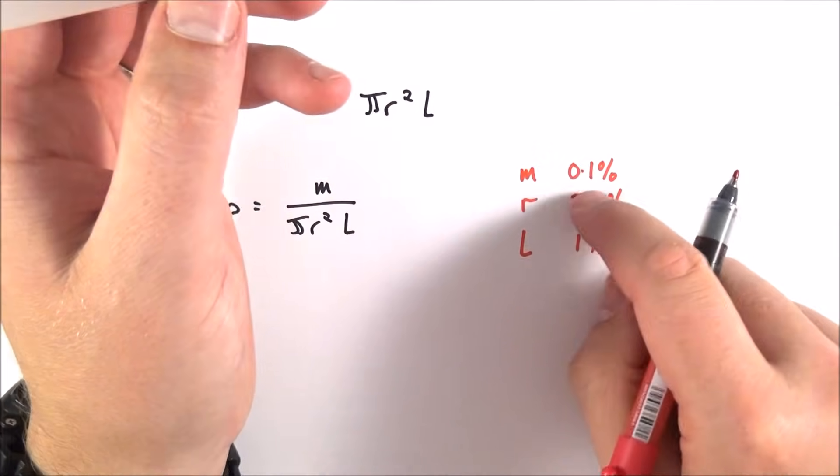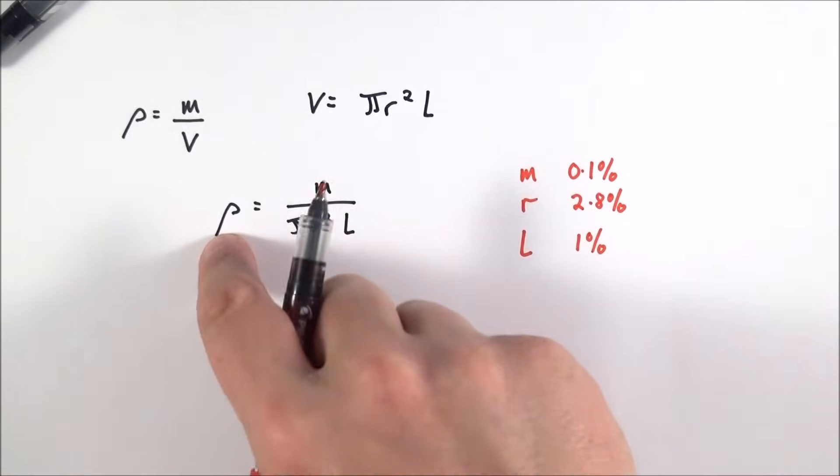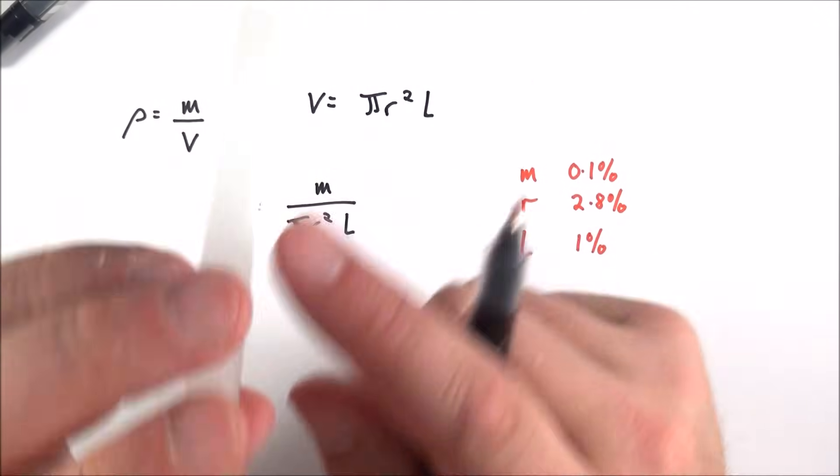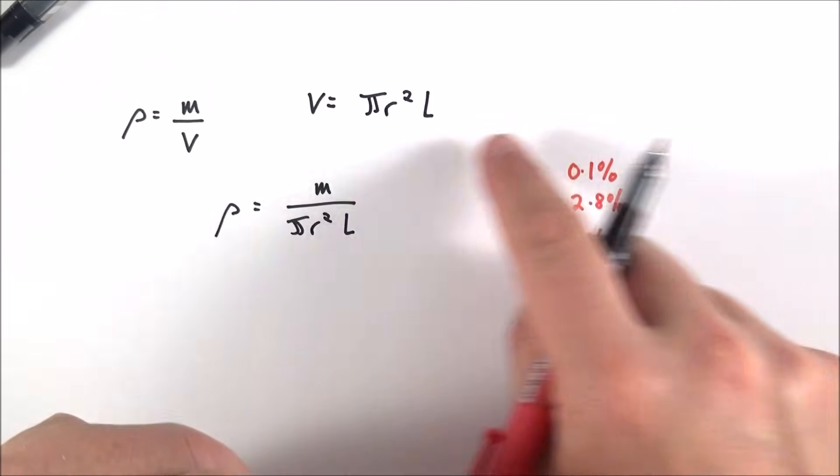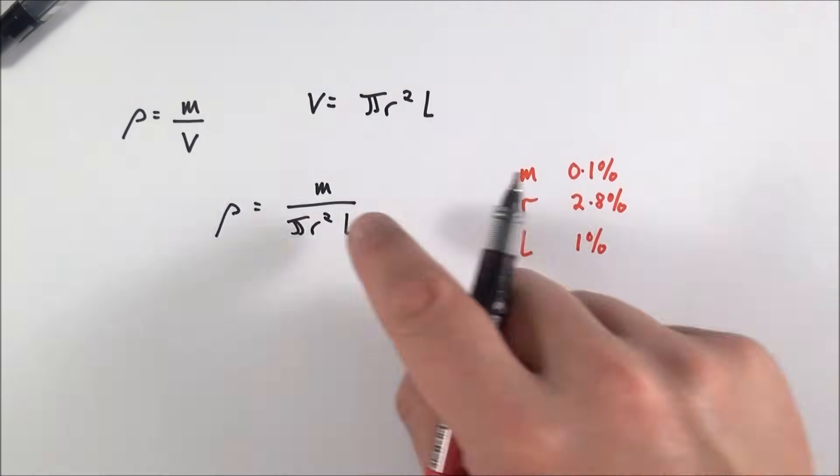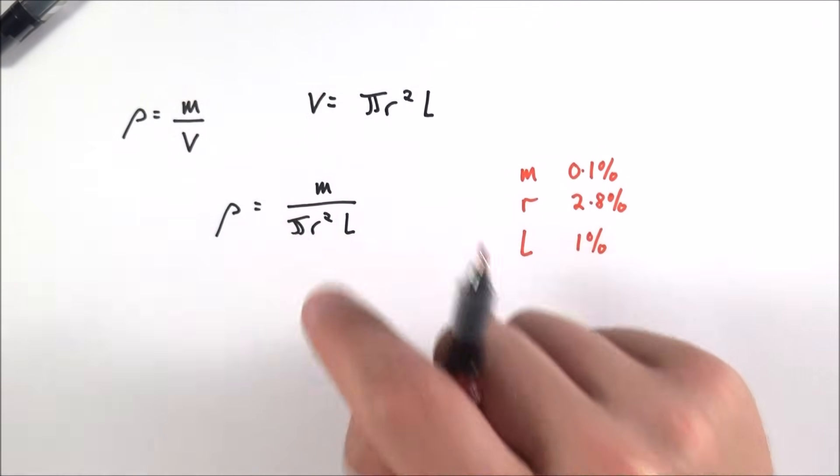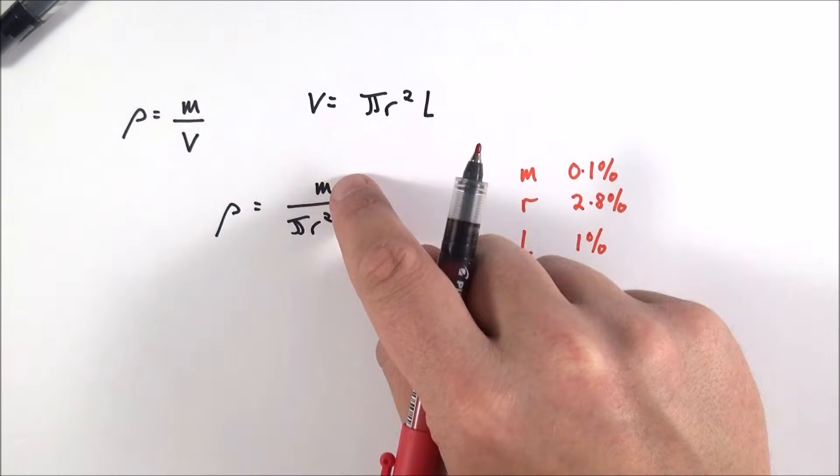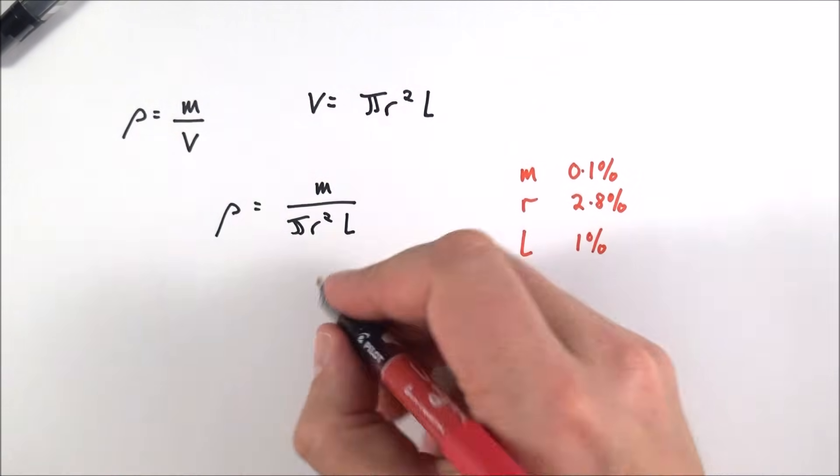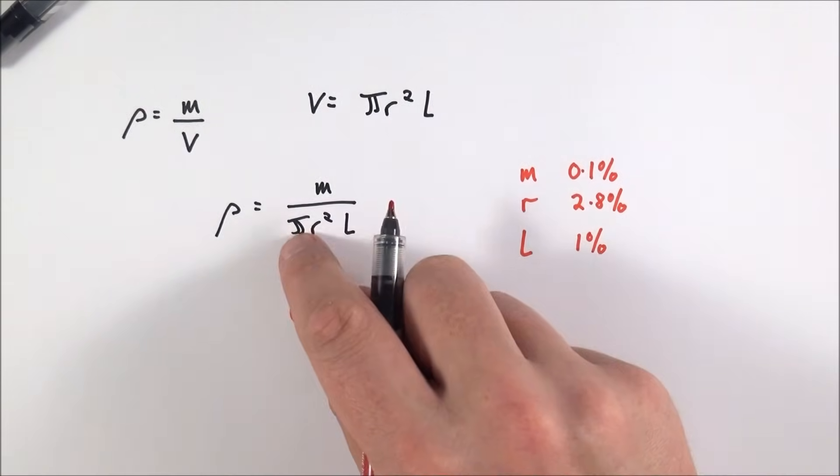Here we have the percentage uncertainties in these values, but what's the total uncertainty? To work out the total uncertainty in your final answer, we combine all of these uncertainties together. It doesn't matter if you're dividing or multiplying; every time you see a term in the equation, you add the uncertainty on.